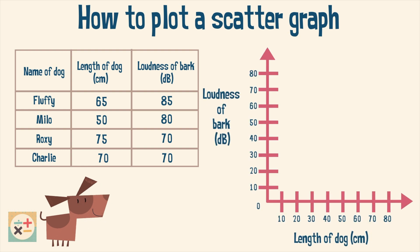Let's first plot the values for the dog named Fluffy. Find 65 centimeters on the x-axis labeled length of dog and draw a line extending from this point. Then find 85 on the y-axis labeled loudness of bark and draw a line extending from this. The point where the two lines cross is where we will draw the scatter plot.